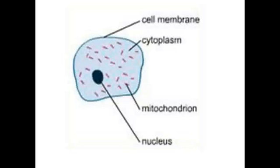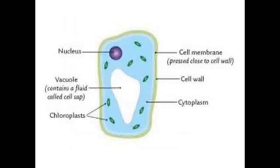All of the features we've seen in animal cells are also found in plant cells like this one, and each of these does the same job as they did in the animal cell. So what extra features do plant cells have? Well, outside the cell membrane we find a thick cell wall, which gives the cell strength and shape.